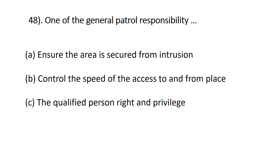Question forty-eight: one of the general patrol responsibilities is — A) ensure the area is secure from intrusion, B) control the speed of access to and from a place, C) qualified person rights and privileges. The correct answer is A, ensure the area is secure from intrusion, which is one of the seven responsibilities of patrol.